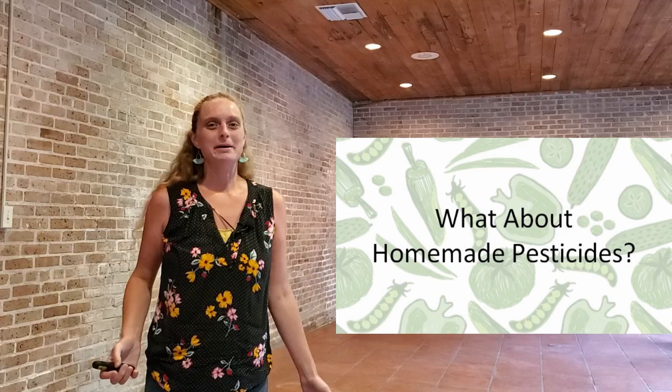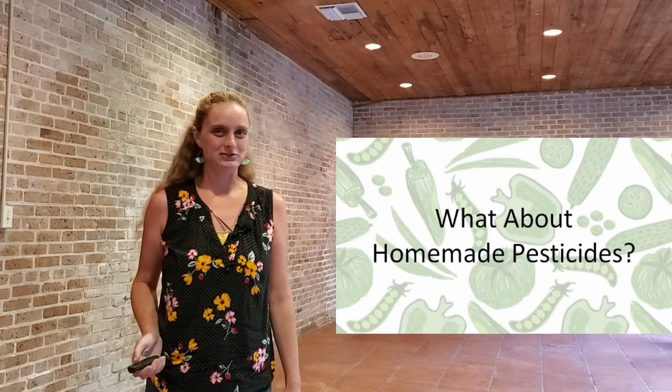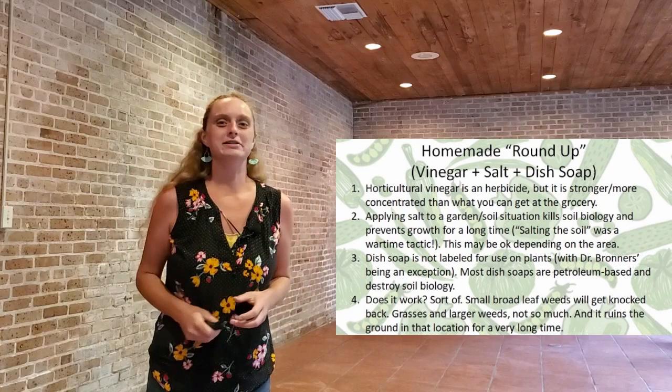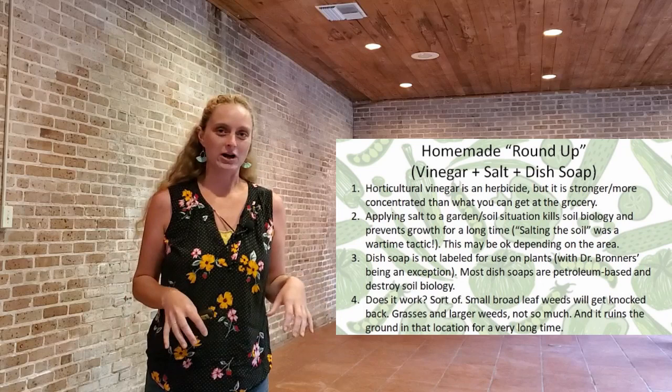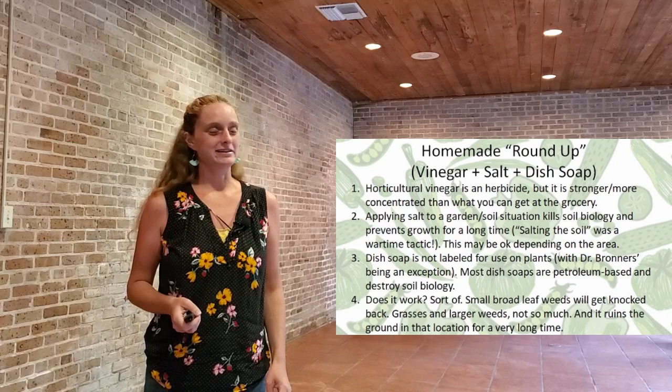What about homemade pesticides that we see all over social media and the internet? There are a lot of recipes circulating using homemade products. One of the more common ones is the homemade Roundup recipe, intended to be used as an herbicide around the garden, driveway, sidewalk cracks, or along a fence line. It typically includes some ratio of vinegar, salt, and dish soap dissolved in water. This is one I've seen a million times and people tag me in it all the time — no!